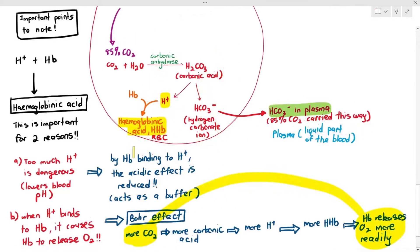The formation of hemoglobinic acid is important for two reasons: number one, to make sure that the pH of the blood does not significantly decrease; and number two, it forces the hemoglobin to readily release oxygen so that the body cells can receive the oxygen they very much need.